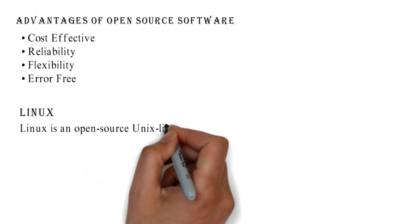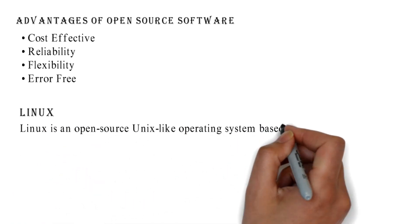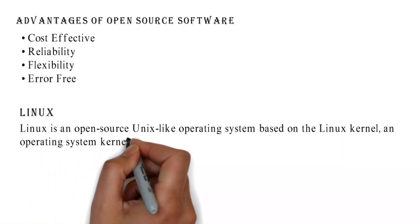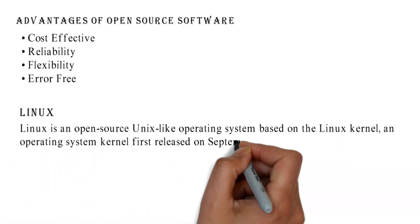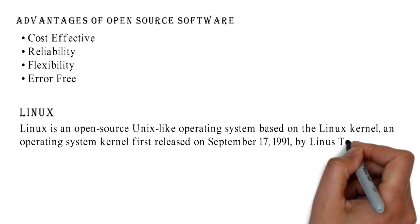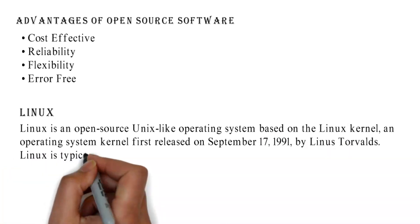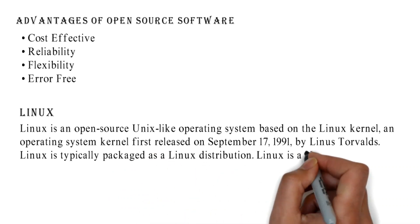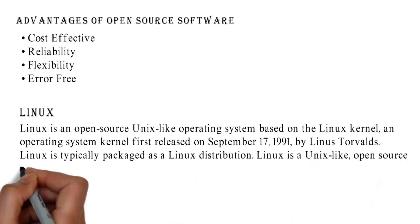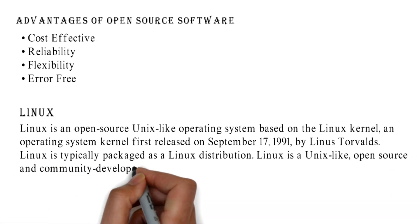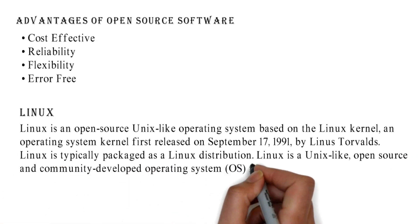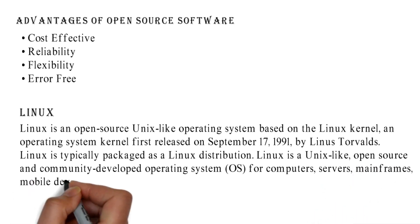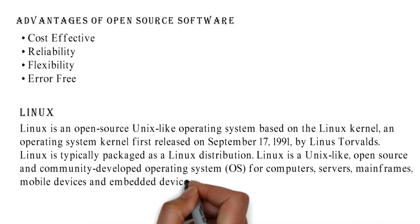Linux is an open source Unix-like operating system based on the Linux kernel, first released on September 17th, 1991 by Linus Torvalds. Linux is typically packaged as a Linux distribution. It is a Unix-like, open source, and community-developed operating system for computers, servers, mainframes, mobile devices, and embedded devices.